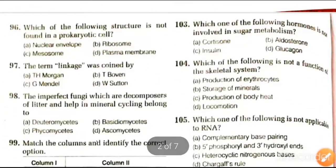Next question: which of the following structures is not found in a prokaryotic cell? Options are nuclear envelope, ribosome, mesosome, plasma membrane. The answer is nuclear envelope, as it is not found in prokaryotic cells.